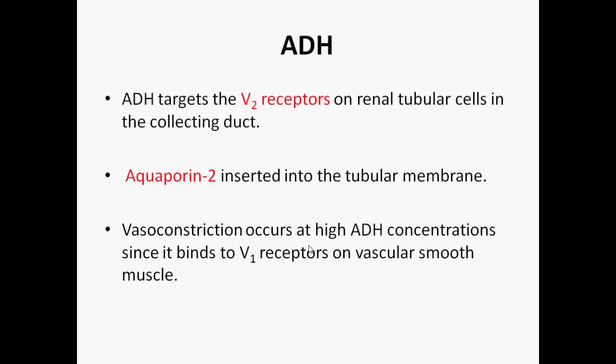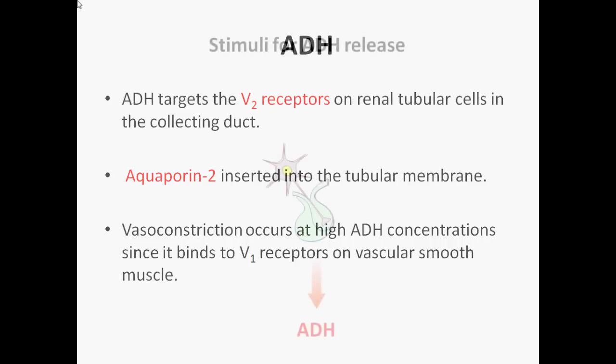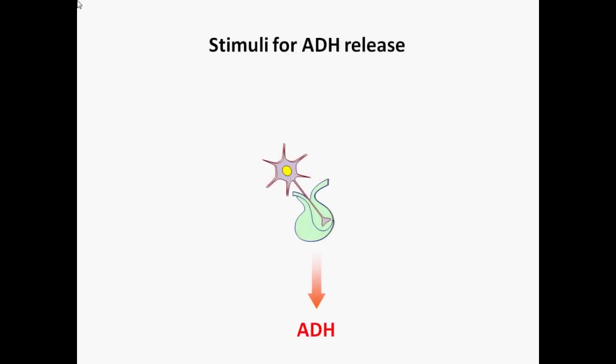To summarise, ADH acts on V2 receptors on renal tubular cells, mediating the integration of aquaporins into the tubular membrane, thereby facilitating the reabsorption of water. At extremely high ADH concentrations, it causes vasoconstriction by binding to V1 receptors on vascular smooth muscle.